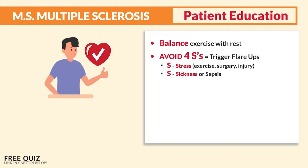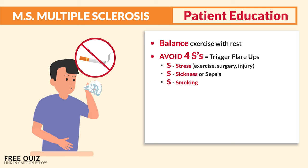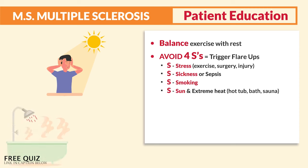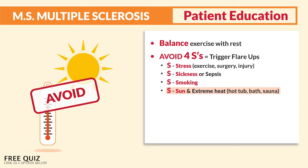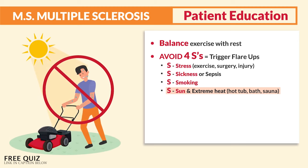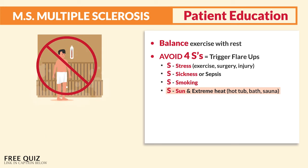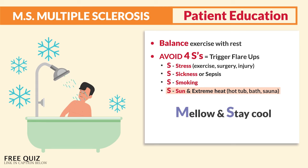The second S is to avoid sickness or sepsis — educate clients to stay healthy and free from infection. The third S is smoking — smoking cessation, typical for all NCLEX questions. The last S, and the one to note: sun and extreme heat are big no-no's. No hot tub, no bath, no sauna. Avoid extreme temperatures — no yard work outside when it's too hot, no hot showers or baths, no saunas or heating blankets. Cool is best — mellow out and stay cool with M.S.